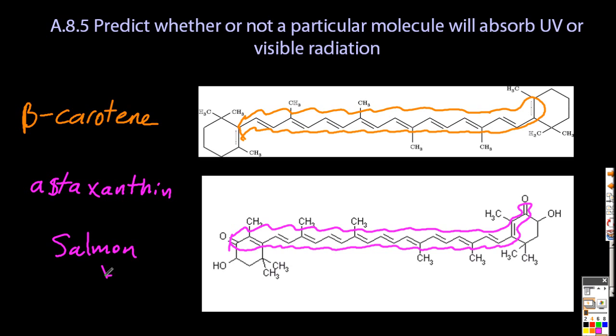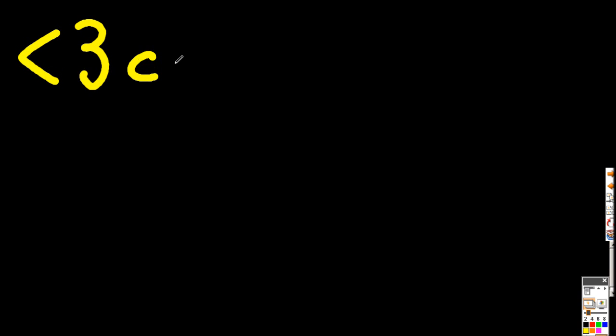So if there's many, many of these conjugated bonds, it absorbs visible, and therefore it will have a color itself, the complementary color of whatever's absorbed.